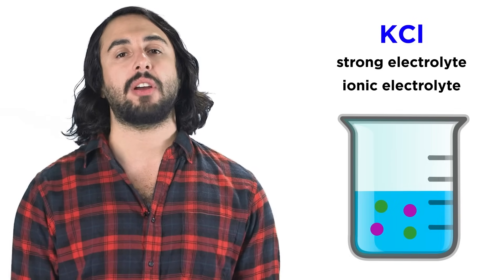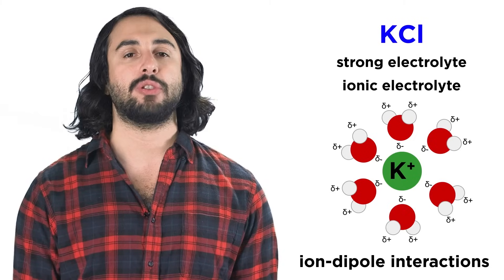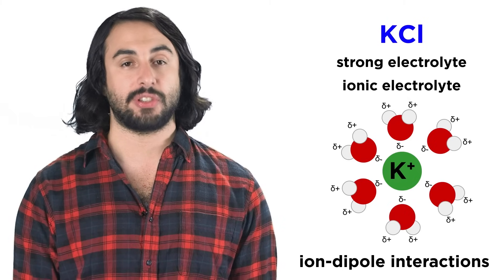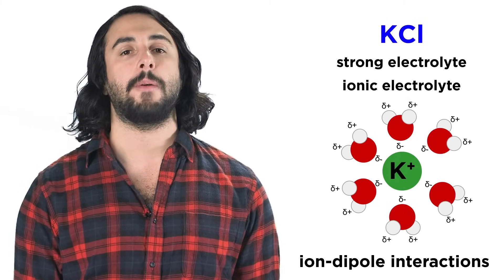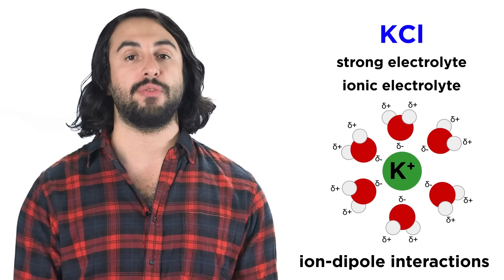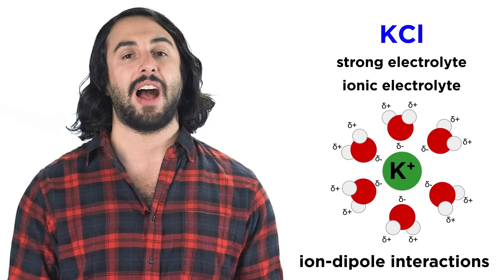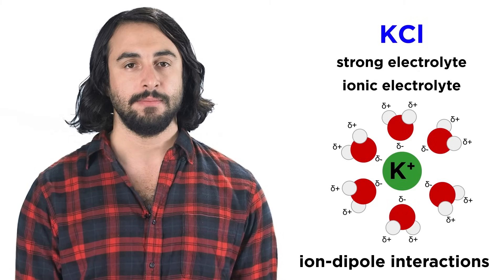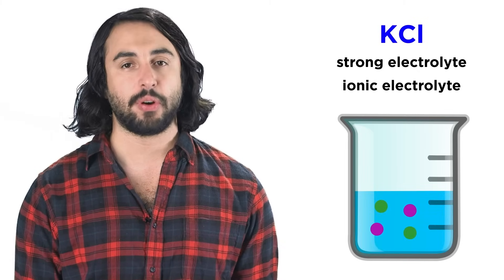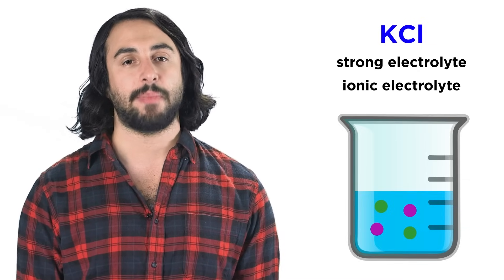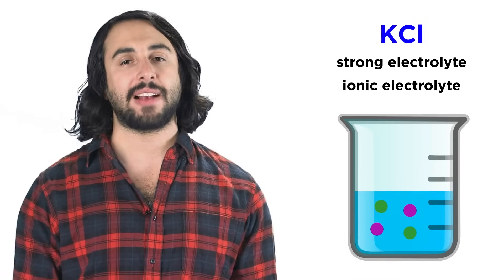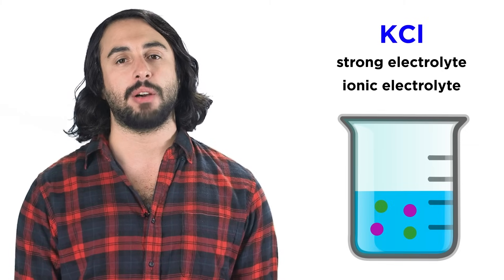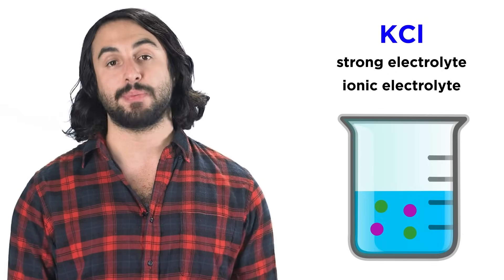The dissolution occurs because the cations and anions will be able to make ion-dipole interactions with the water molecules that comprise the solvent, and this energy storage, combined with the greater disorder of the solution over a crystallized ionic solid, is what results in spontaneous dissociation. The ions will therefore be dispersed throughout the solution in order to maximize solvation — that is, to maximize the ion-dipole interactions that are occurring, by allowing for as many water molecules to interact with each individual ion as possible.